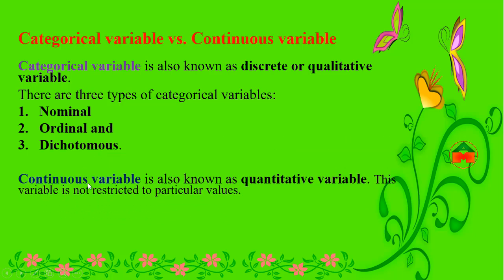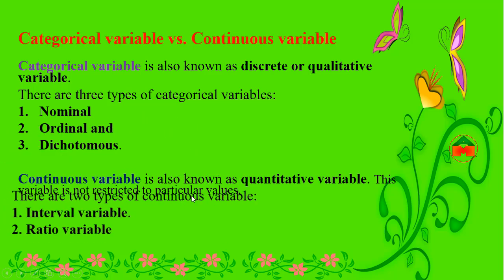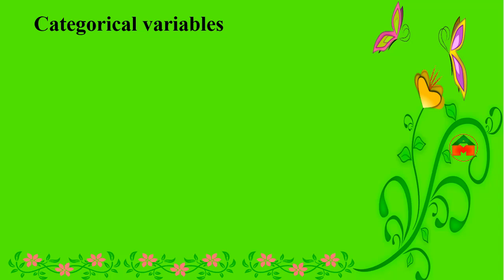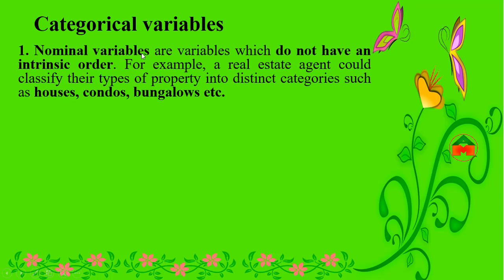A continuous variable is also known as a quantitative variable. This variable is not restricted to particular values. There are two types of continuous variables: interval variable and ratio variable. Now we are going to see detailed examples of categorical variables with their definitions.